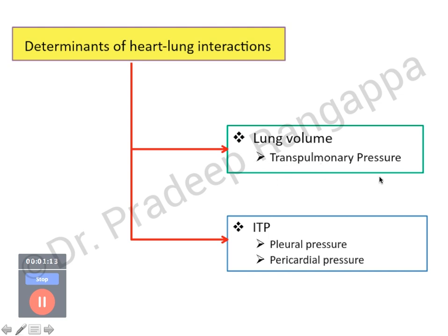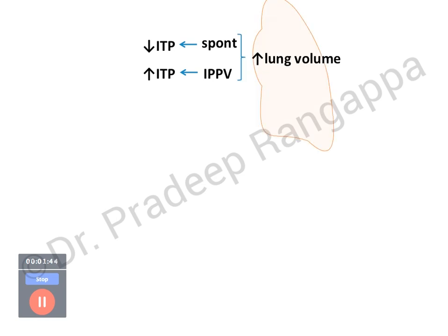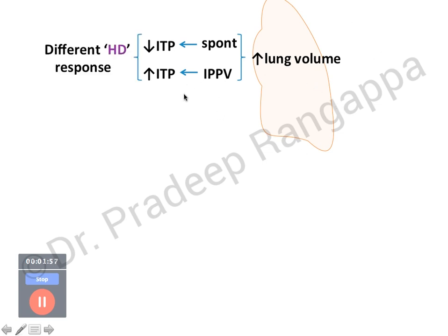Lung volume has a direct bearing on transpulmonary pressure. Intrathoracic pressure constitutes pleural pressure and pericardial pressure — these are key variables with a complex interplay in various conditions. When a patient is breathing spontaneously, there is a reduction in intrathoracic pressure. But when you put the patient on controlled intermittent positive pressure ventilation, intrathoracic pressure increases. Increases in lung volume produce more profound effects, and varying lung volumes produce different hemodynamic responses in spontaneously breathing versus ventilated patients.